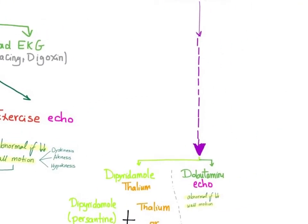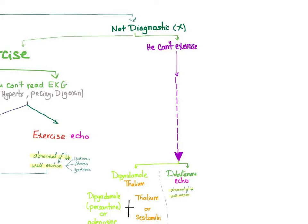Last scenario: if the EKG is not diagnostic and the patient cannot exercise, you will use another thing to make the heart move faster and contract harder. What's that? Dipyridamole thallium or dobutamine echo.